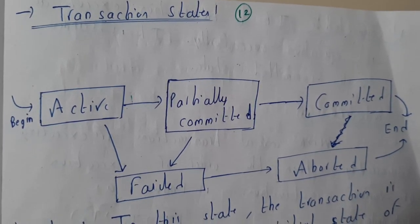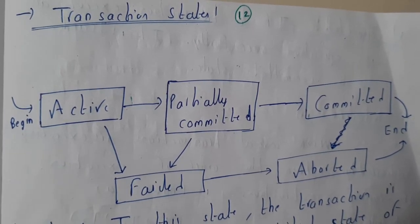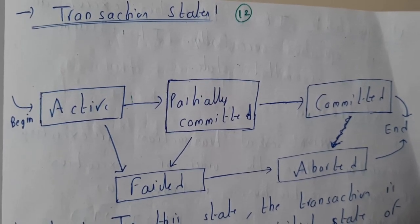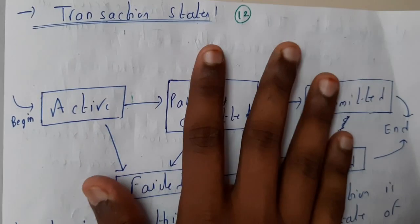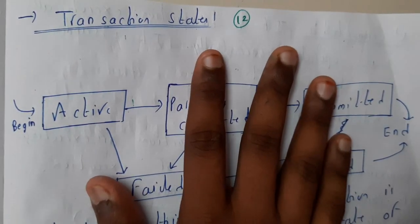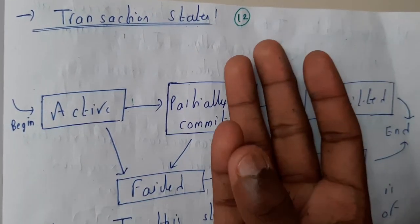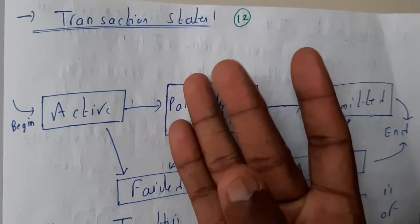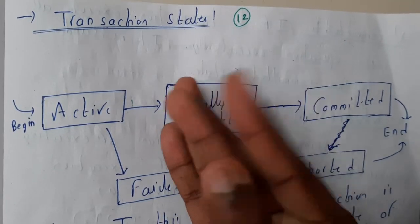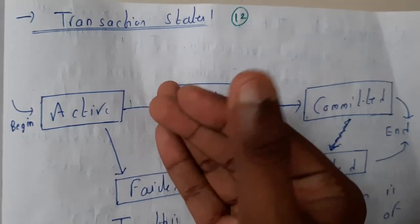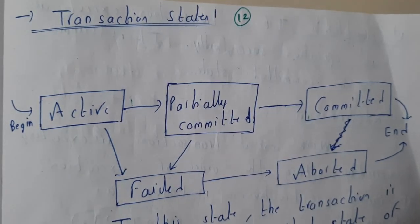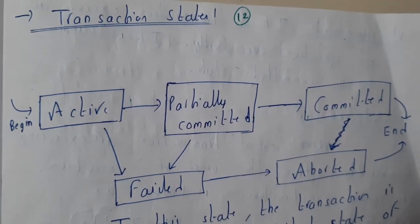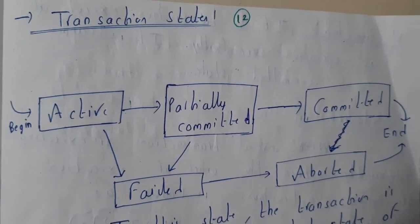Hello guys, we are back with our next tutorial. In this tutorial let us go through transaction states. There are five transaction states: active, partially committed, committed, failed, and aborted. We'll be going through one after the other.